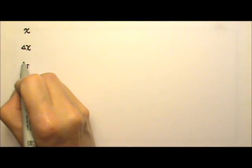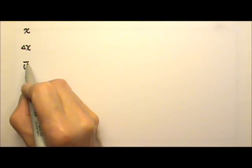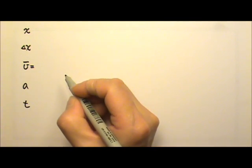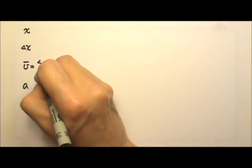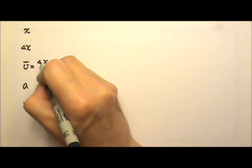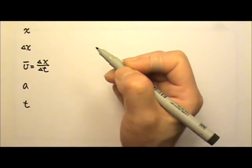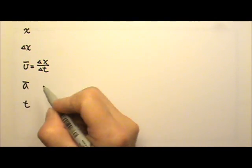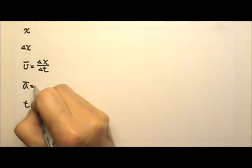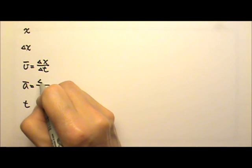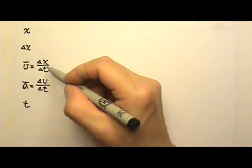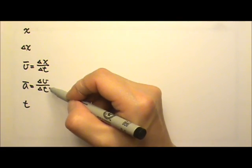If we put a bar on top, that means it is the average value. Average velocity is defined as delta x over delta t. And average acceleration is the change in velocity divided by the change in time. Those are the average values.